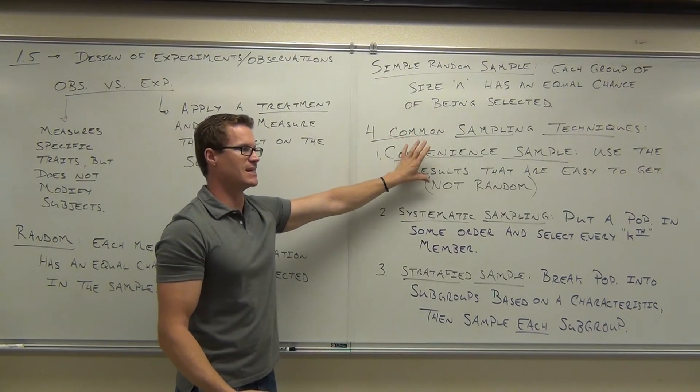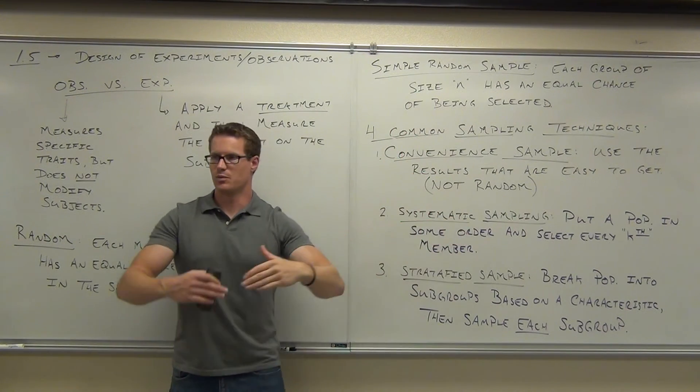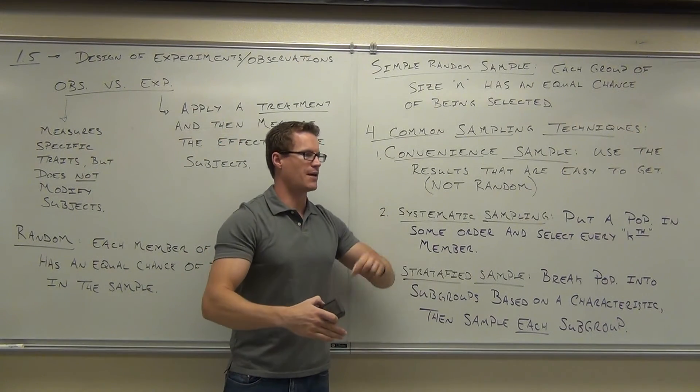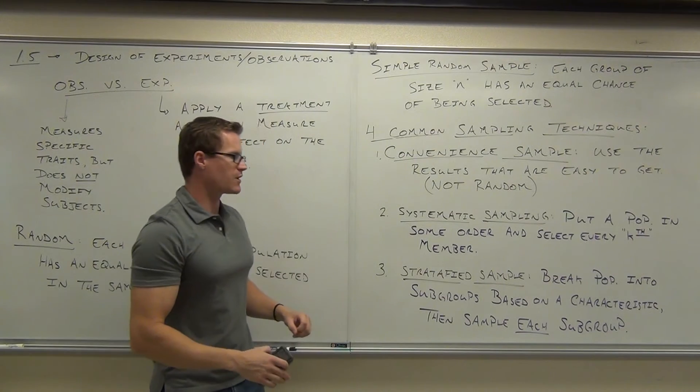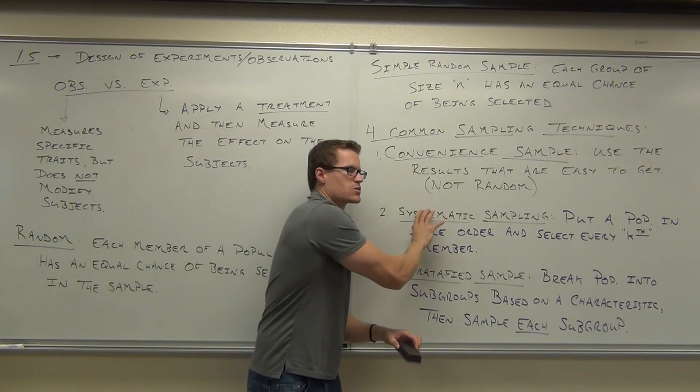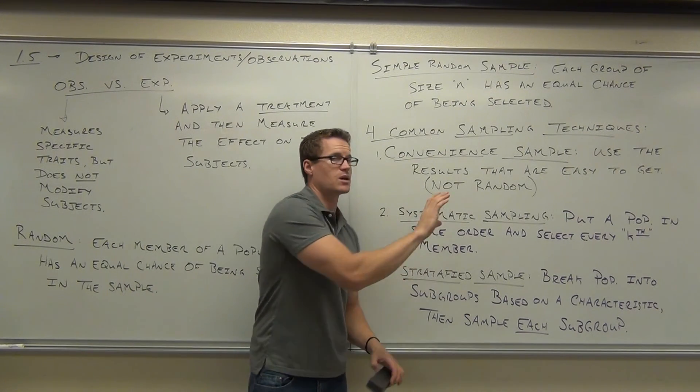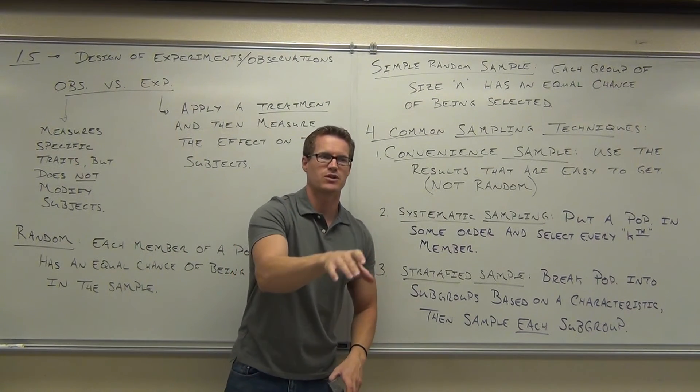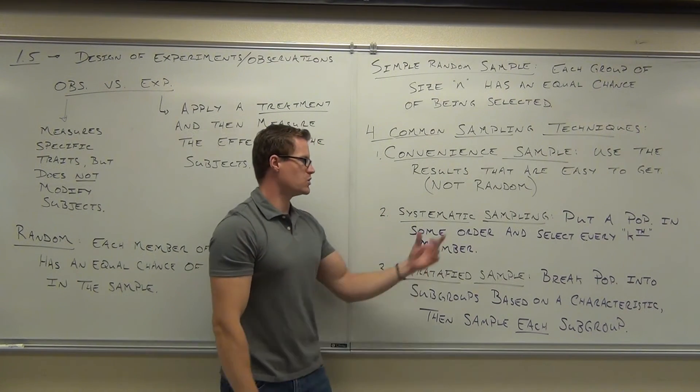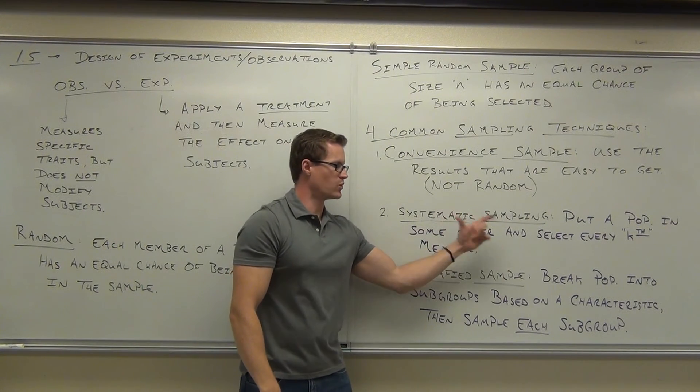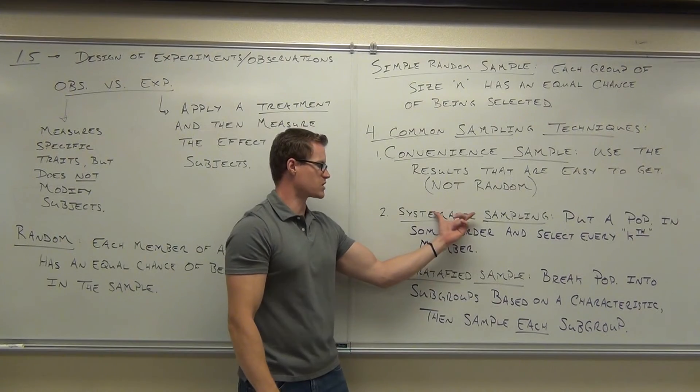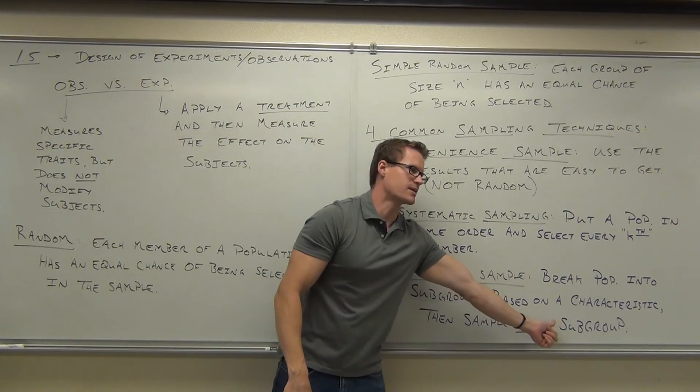Systematic sample, we put it in order. Take every third or every fifth or every tenth item after starting at a random place. Stratified says we don't necessarily want to do this one. We want to have subgroups here. So we're going to break our population into subgroups and then sample each one. By the way, could you use this in conjunction with this one? Yeah, you could use a systematic on each of these subgroups. That's how you would do it.